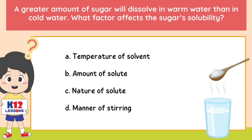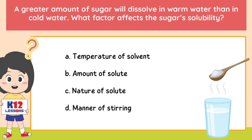A greater amount of sugar will dissolve in warm water than in cold water. What factor affects the sugar solubility? A. Temperature of solvent. B. Amount of solute. C. Nature of solute. D. Manner of stirring.